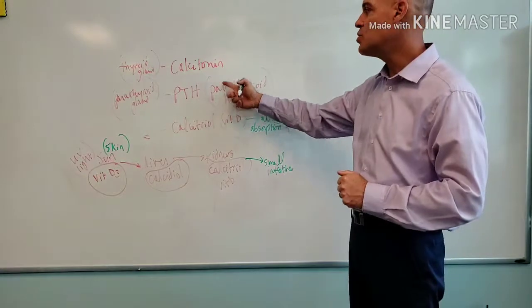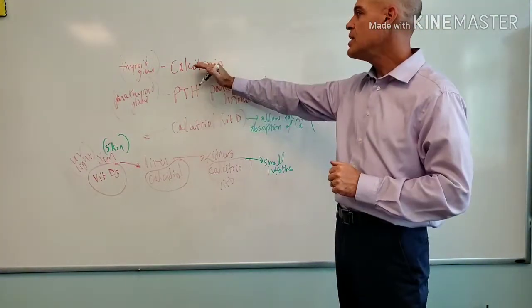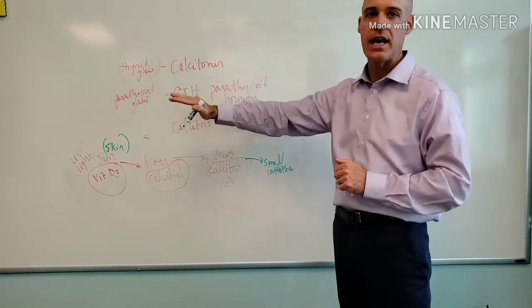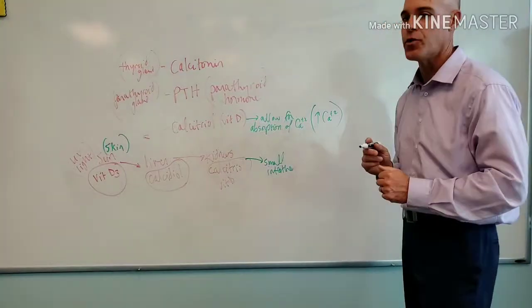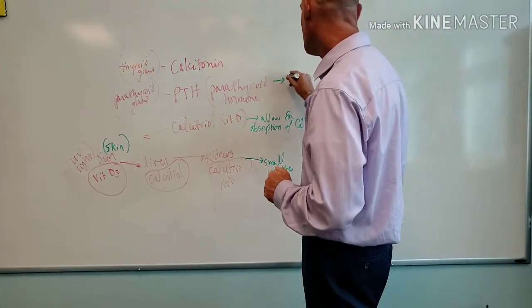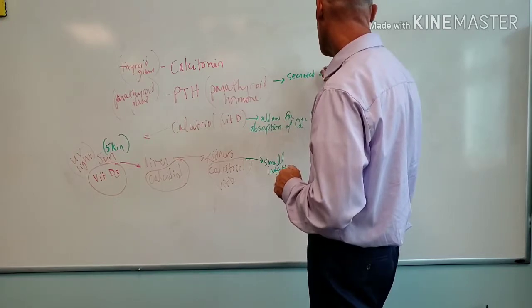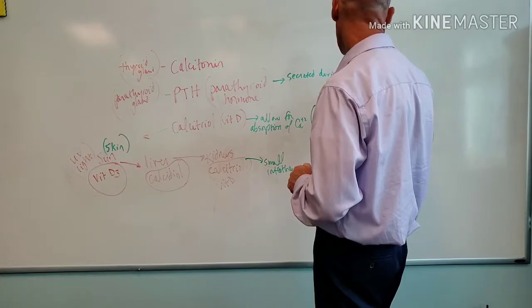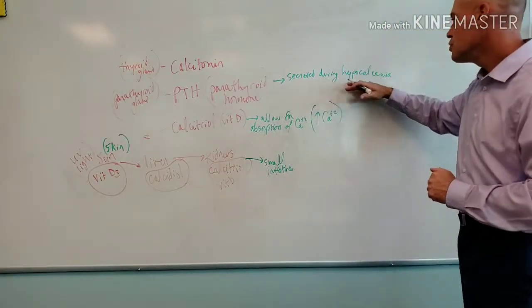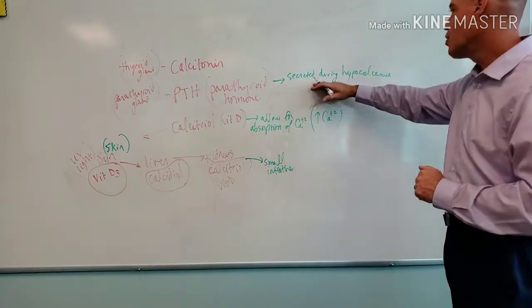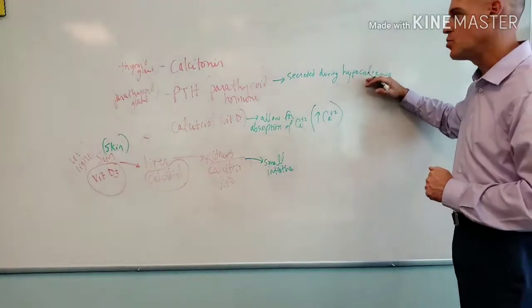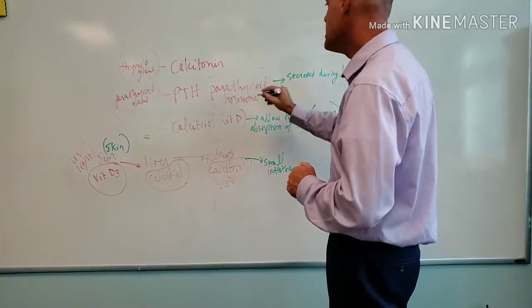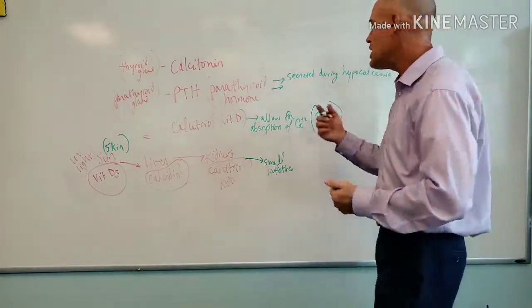Now we come up to these two here. Now these two are a little bit different. These two are antagonists, which means one is going to do one thing, the other is going to do the exact opposite. So let's actually talk about PTH first. What does PTH do? It is going to be secreted during hypocalcemia. So what is hypocalcemia? This is going to be low levels of calcium. So when we have low levels of calcium, PTH is going to be secreted.